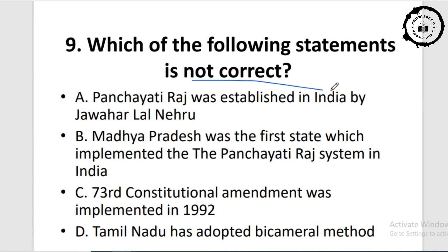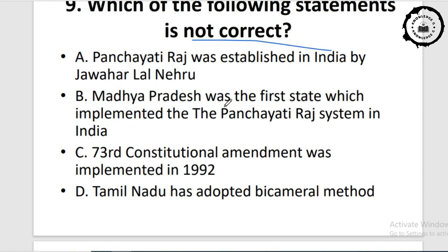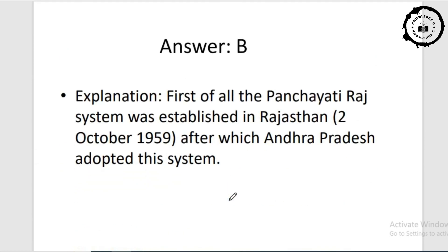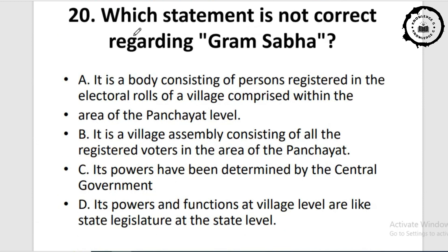Question nine: which of the following statements is not correct? The answer is option B — 'Madhya Pradesh was the first state.' We have already discussed that Rajasthan was the first state to implement the Panchayati Raj system in India. The rest of the statements — Panchayatiraj established by Jawaharlal Nehru, 73rd Amendment in 1992, and Tamil Nadu adopting the bicameral method — are all correct.